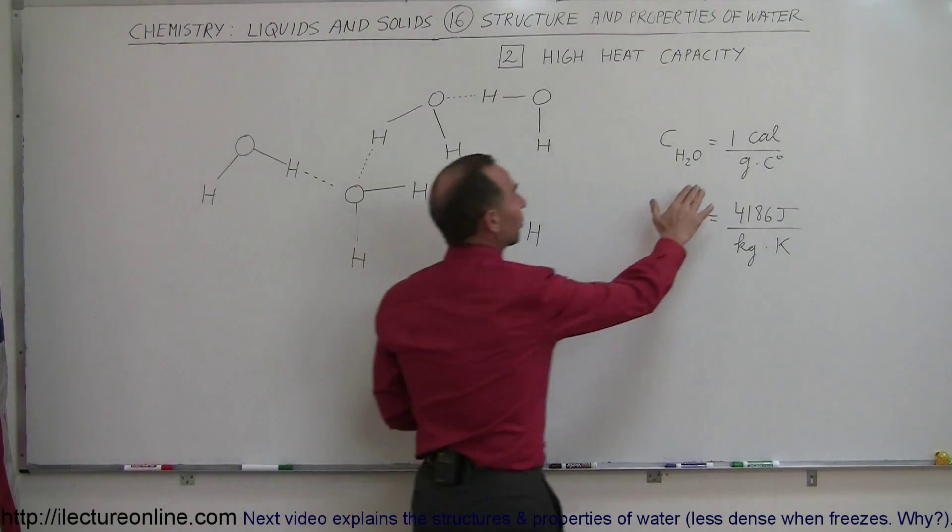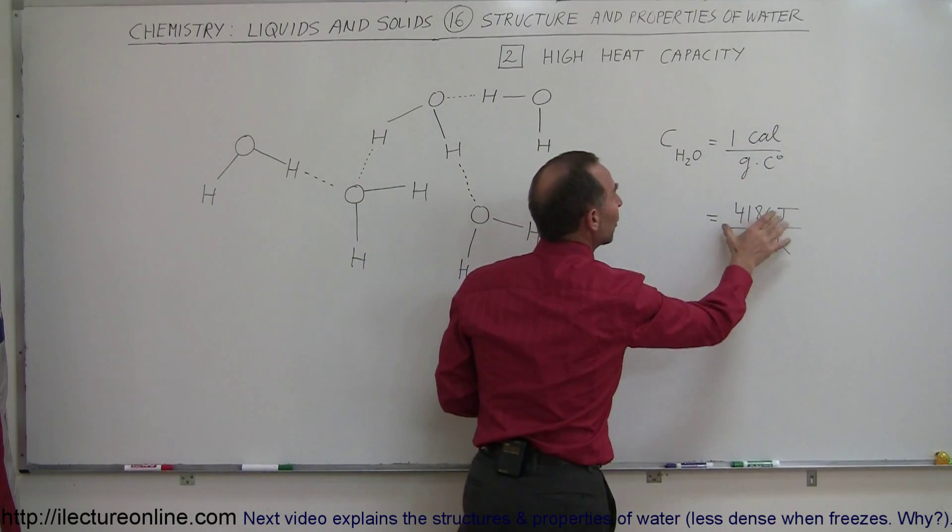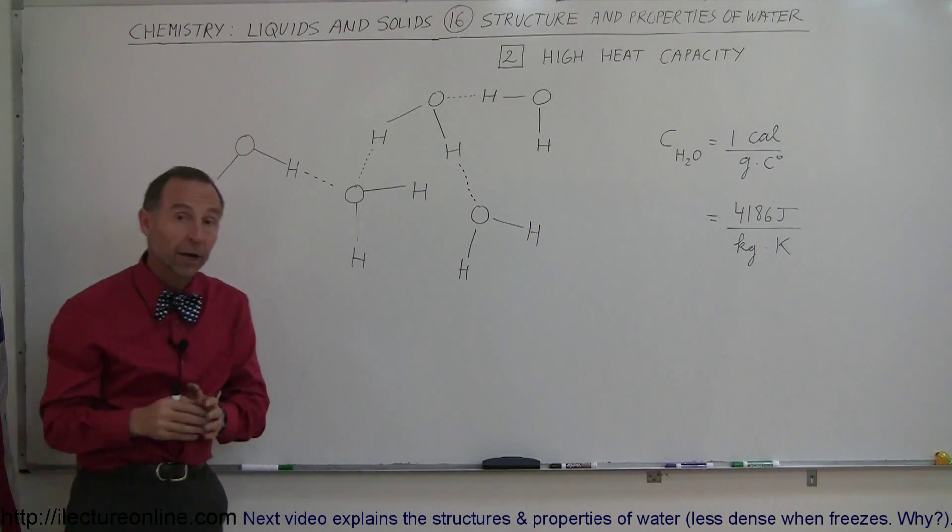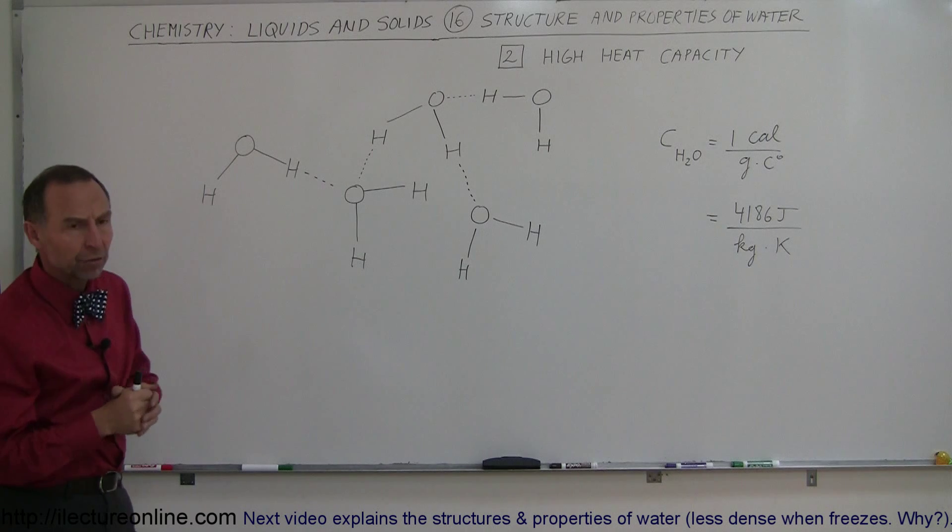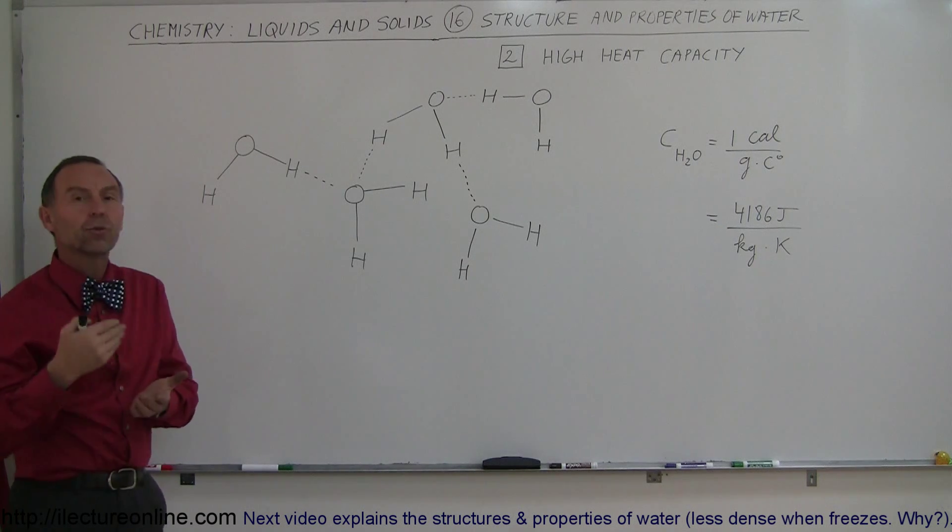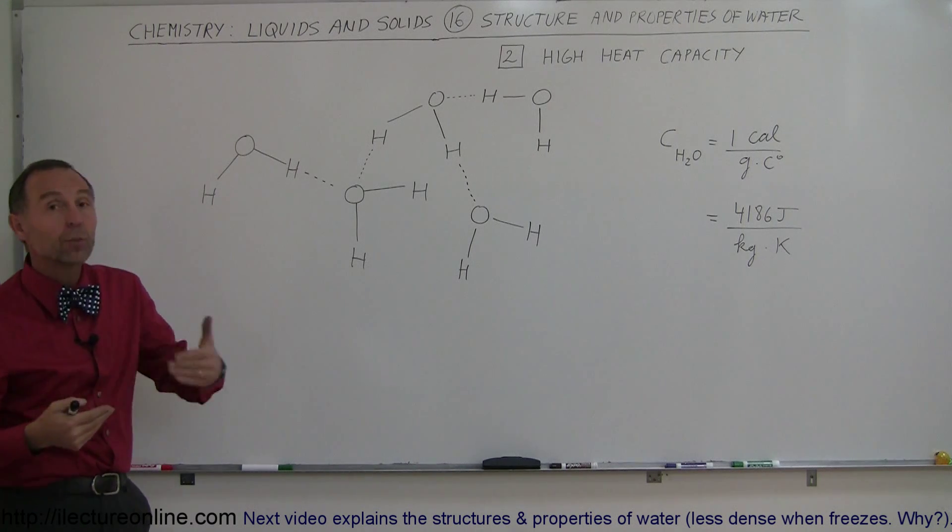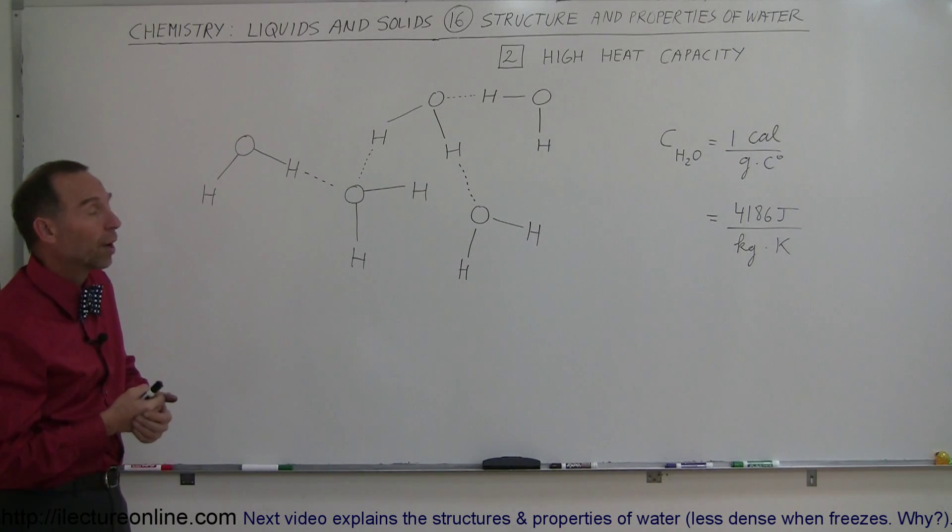Matter of fact, the heat capacity of water is one calorie per gram per centigrade degree, or 4186 joules per kilogram of water per kelvin. Compared to metals, that is almost a 10 to 1 ratio. Aluminum has a high heat capacity for metal, but it's only 1/5th the heat capacity of water.